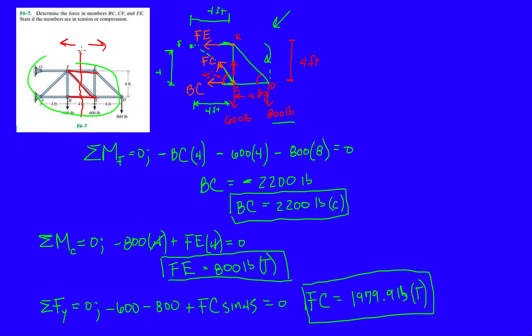That's it for method of sections. Remember, you already know static equilibrium equations: three forces in the X, Y, and Z, three moments in the X, Y, and Z, all equal to zero. With trusses, the method of sections is cut through a portion where you intersect all these members. Don't make a cut anywhere else that you're not going to be able to find BC, CF, and FE, or whatever they're asking you.